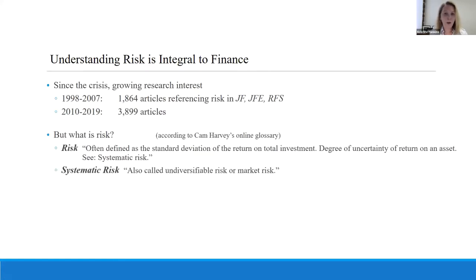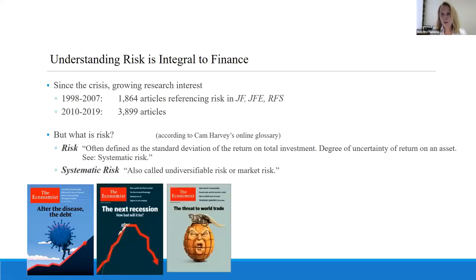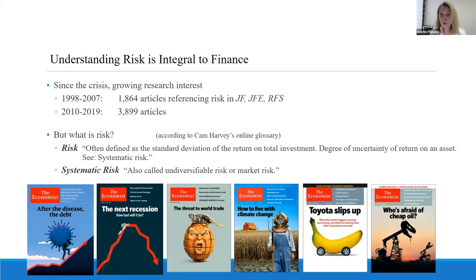When we talk about risk, the question is: what is risk? Borrowing from Cam's online glossary, it references standard deviation, systematic risk, beta — things that can't be diversified. But when we think about how people, managers, and the market think about risk, is it beta? Is it standard deviation? Thinking like an economist, they might be thinking about COVID, recessions, trade risk, climate change risk, reputation risk, or commodity input price risk. We know that risk comes in many flavors, and it varies over time what is going to be more or less salient to the market and to managers.